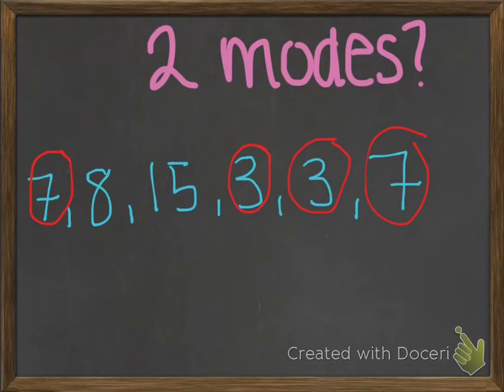If there are two modes, like in this data, 7 and 3 are the modes because they both repeat twice, while the other numbers in the data appear once.